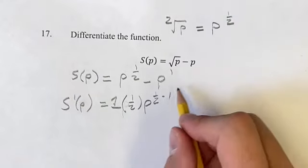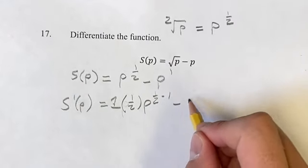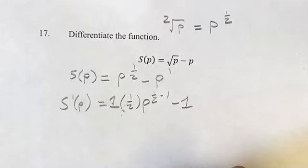Times 1/2 p, and then our new exponent is our old exponent minus 1. So 1/2 minus 1.